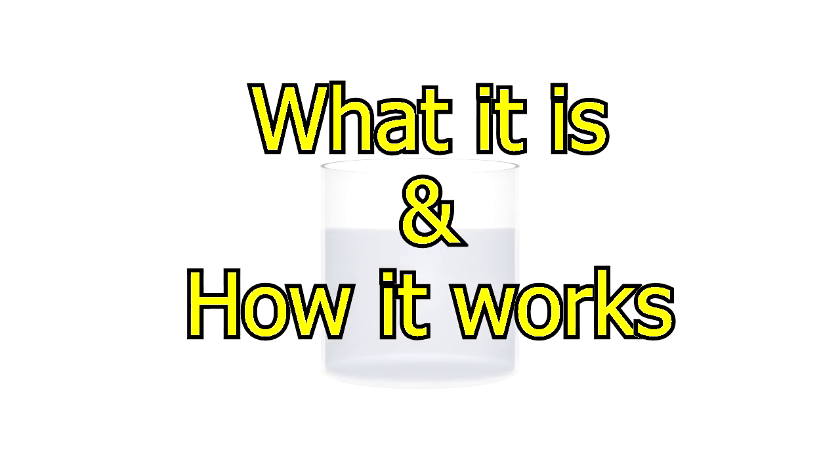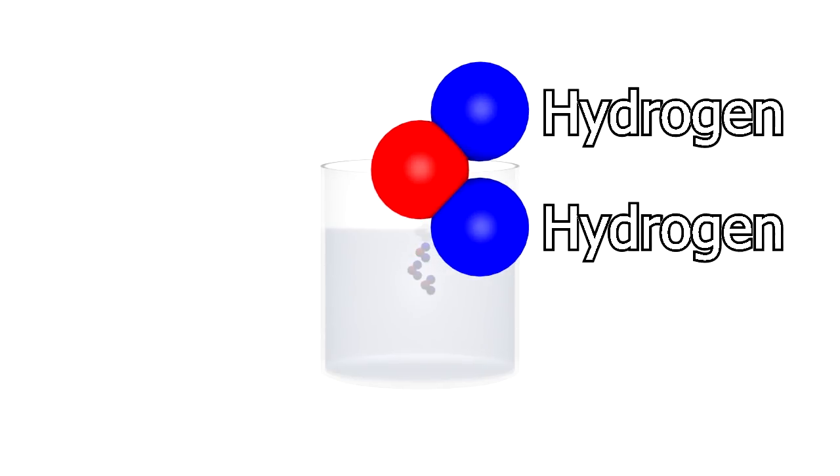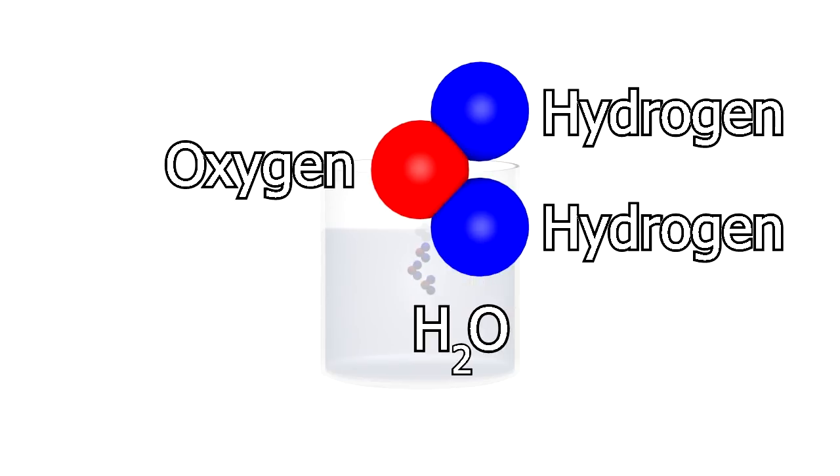To give you some idea of what you'll be seeing, I'll start with what an electrolyzer is and how it works. Water is made from two types of atoms, hydrogen and oxygen. It's written as H2O, or two parts hydrogen and one part oxygen.